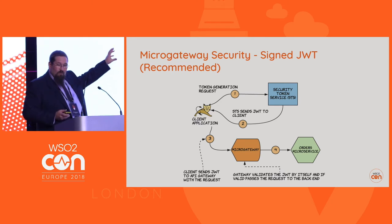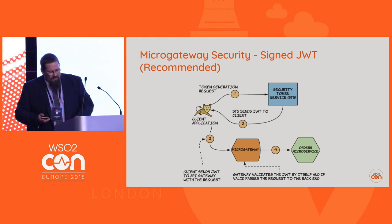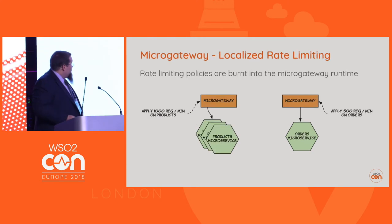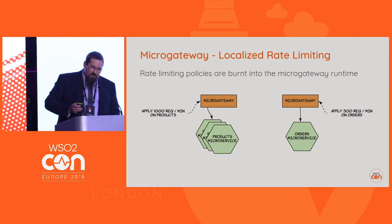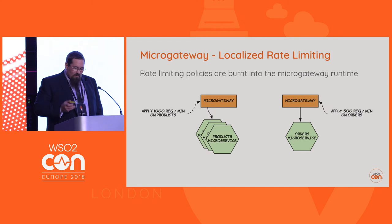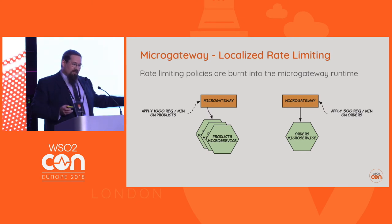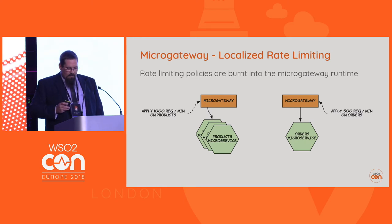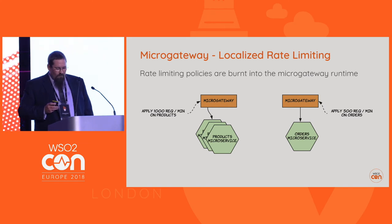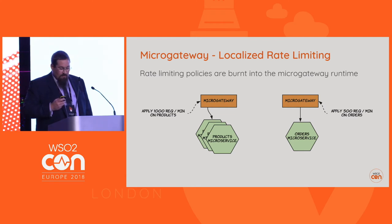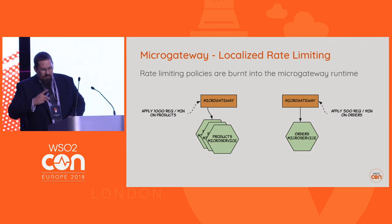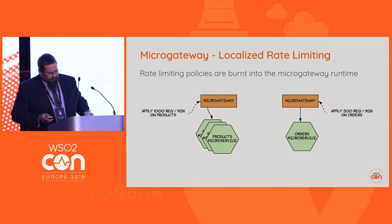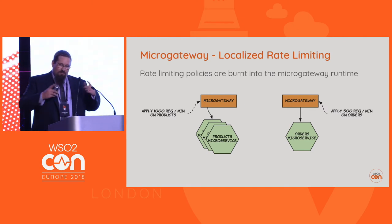The recommended approach for token validation in the microgateway is to use signed JWTs, which means the gateway can validate the token itself internally without calling any external services. The initial stage is getting the token, but the gateway doesn't have to make that call to the security token service for validation. That makes it far more autonomous, easier to scale, and much better fitted to modern architectures. Rate limiting is also built in at creation time — all the rate limiting policies are created using the publisher and store at design/development time, but at runtime they're hard-coded into the microgateway, limiting any communication needed to outside dependencies.